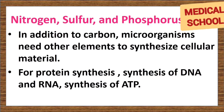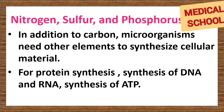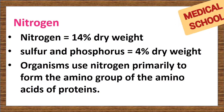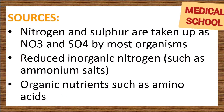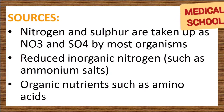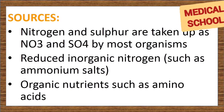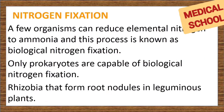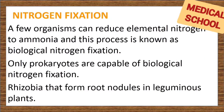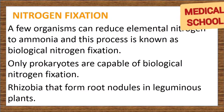Nitrogen, sulfur, and phosphorus. In addition to carbon, microorganisms need other elements to synthesize cellular material — for protein synthesis, synthesis of DNA and RNA, and synthesis of ATP. Nitrogen makes up about 14% of the dry weight of a bacterial cell, and sulfur and phosphorus together constitute about another 4%. Organisms use nitrogen primarily to form the amino group of amino acids in proteins. Nitrogen and sulfur are taken up as NO3 and SO4 by most organisms and are subsequently reduced within the cell and utilized in biosynthetic processes. Some organisms can also use reduced inorganic nitrogen such as ammonium salts. The nitrogen and sulfur requirements of most organisms can also be met by organic nutrients such as amino acids. A few organisms can reduce elemental nitrogen to ammonia — this process is known as biological nitrogen fixation. Only prokaryotes are capable of biological nitrogen fixation. The most important group is the rhizobia, which form root nodules in leguminous plants.